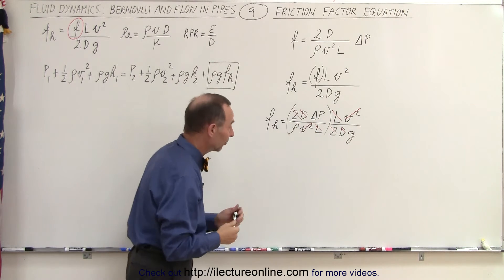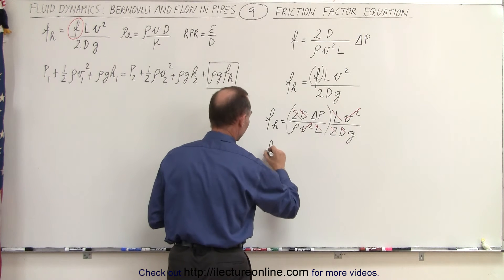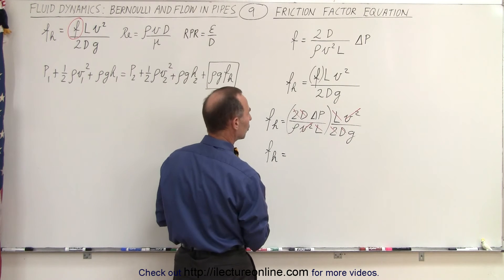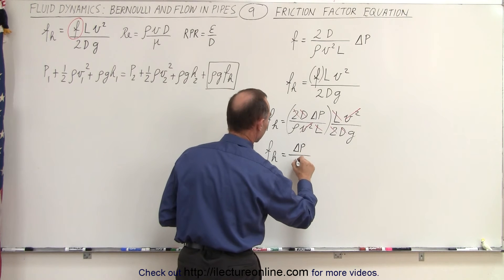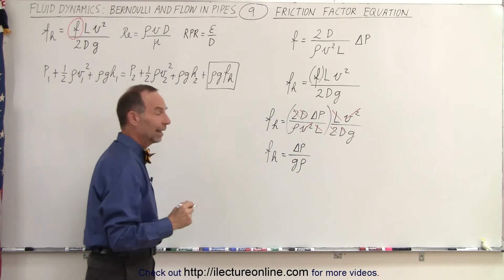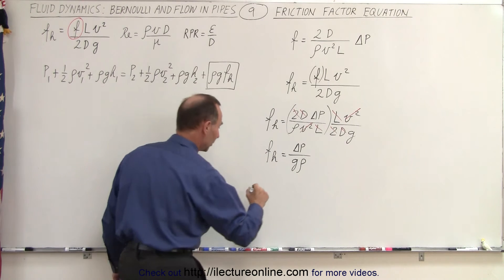And let's see what that leaves us. So now we have the frictional head loss, which is equal to delta P, the change in the pressure, divided by G times the density. And then if we solve that for delta P,